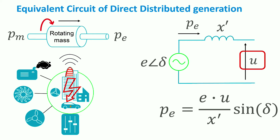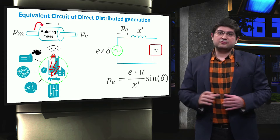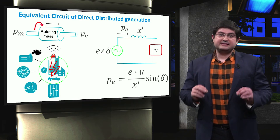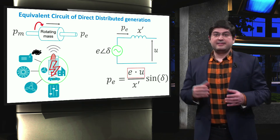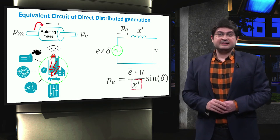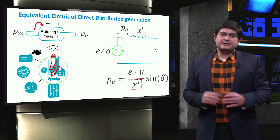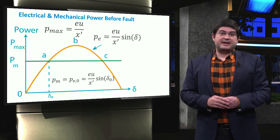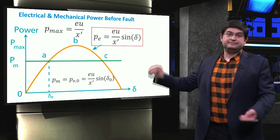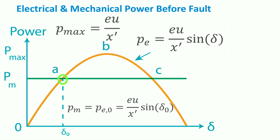The voltage at the terminal of the machine is shown by U. Taking into account AC power calculations, the AC power can be calculated based on the amplitude of the internal and terminal voltage of the machine, the rotor angle delta, and the transient reactance of the machine. The electrical power PE depends on the sine of the rotor angle, as shown in the power versus rotor angle figure. At point A, the input mechanical power Pm is equal to the electrical power at delta 0 during the stable steady-state condition before the fault.